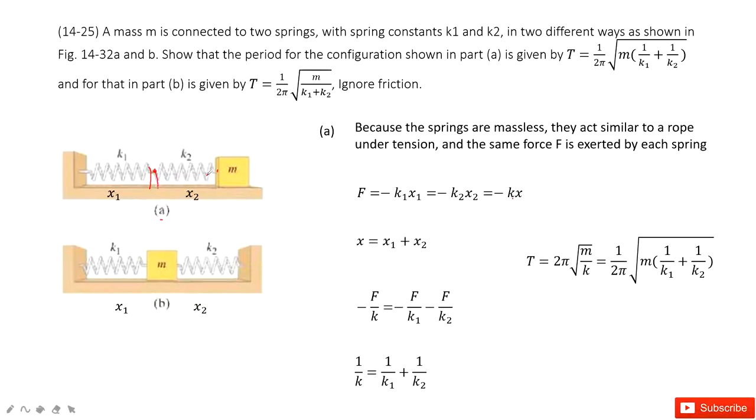We can write the equation for x: x equals negative F over k. Since F equals negative kx, x is negative F over k, and similarly for x1 and x2.